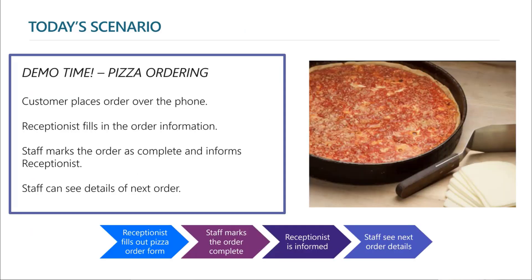Today's scenario is all about pizza ordering. The customer is going to place a pizza order over the phone. The receptionist fills out the order information. The staff marks the order as complete and informs the receptionist or customer. We could change the workflow - you can notify the customer if you want. Then the staff can see the details of the next order. That last one is a Power Virtual Agent bot, and I have a demo ready if we don't have time.